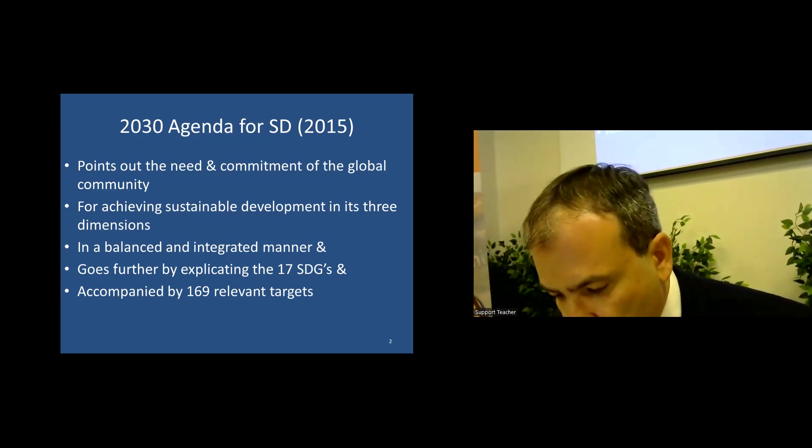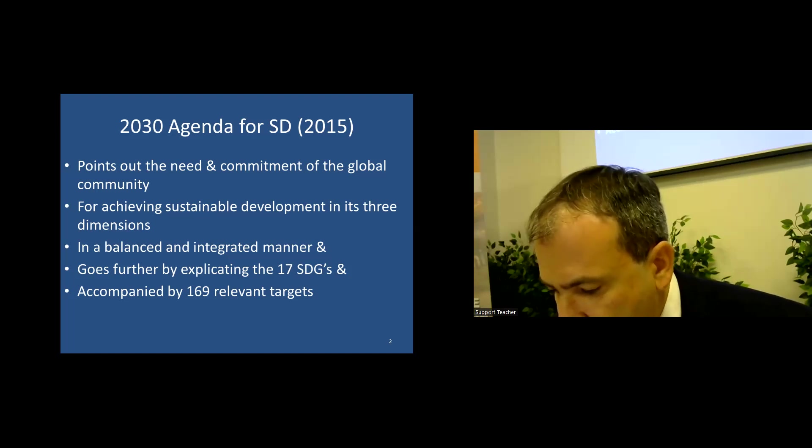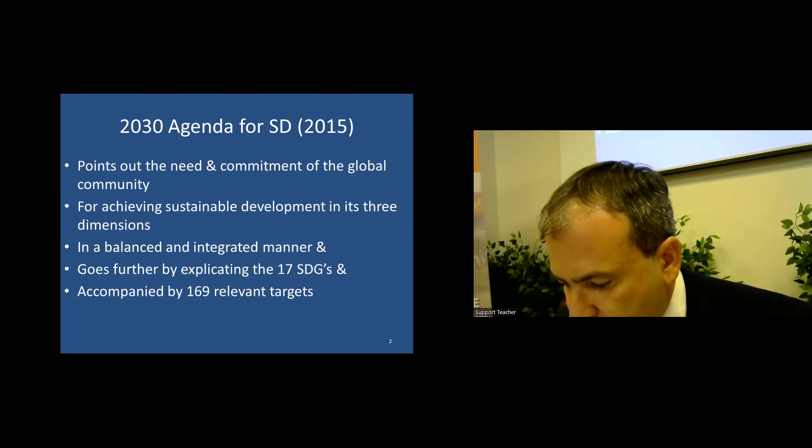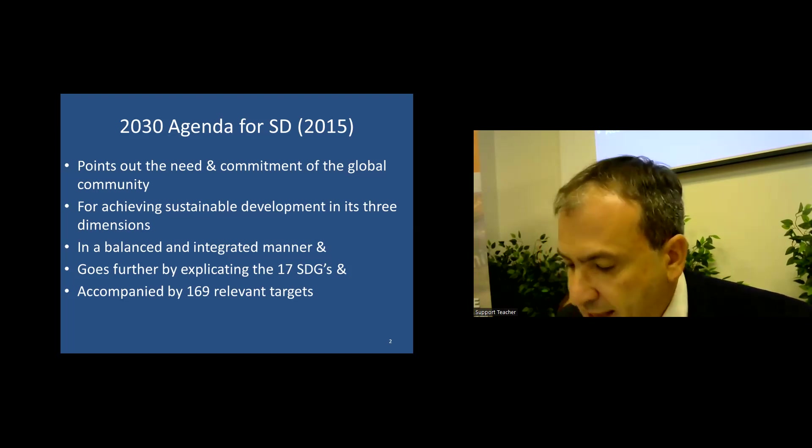The most commonly used model of sustainable development presents these dimensions as three interconnected and partially overlapping circles of equal size, thus implying that efforts should be made in order to bring them together in a balanced manner. This model has been criticized as overly simplistic as it promotes the approach towards sustainability in a very compartmentalized manner. As a result, the complex connections between economy, society and environment are undervalued and the same applies for the holistic nature of the sustainable development concept. Despite the criticism, the three-link model remains as a good basis in the field of sustainability practice and research.